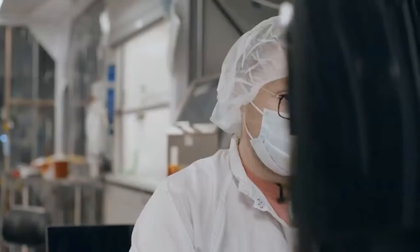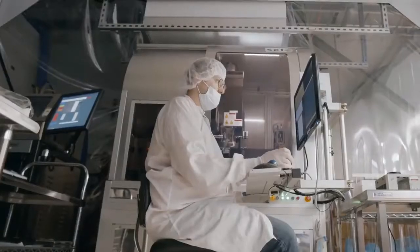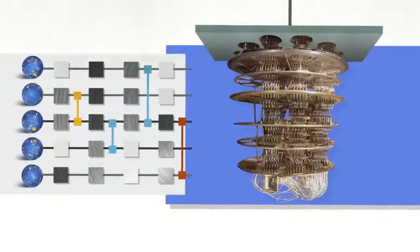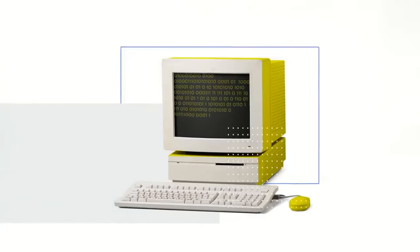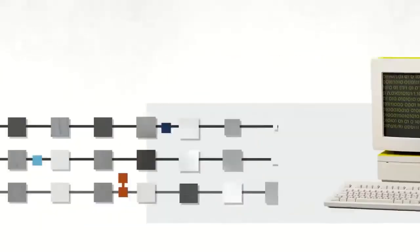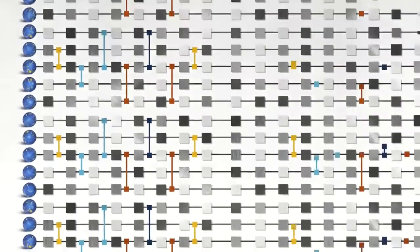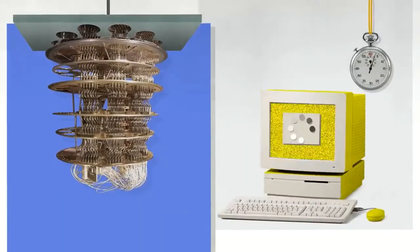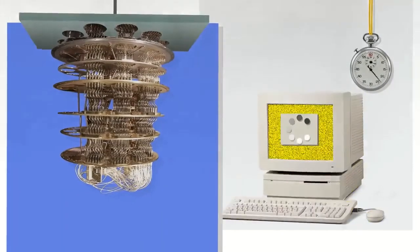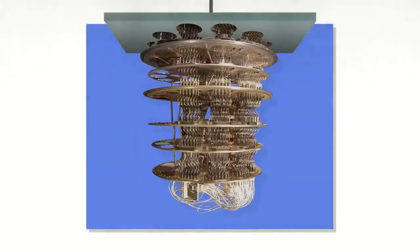The nice thing about quantum supremacy is that this is a very well-defined engineering milestone. In a nutshell, what we're trying to do is show that experimental quantum computers can surpass the best supercomputers in the world. To actually demonstrate quantum supremacy, we have three steps: first, pick a circuit; second, run it on the quantum computer; third, simulate what the quantum computer is doing on a classical computer. We gradually increase the complexity of that circuit. At some point it becomes completely impossible for the classical computer to keep up, and then we say we've achieved quantum supremacy.